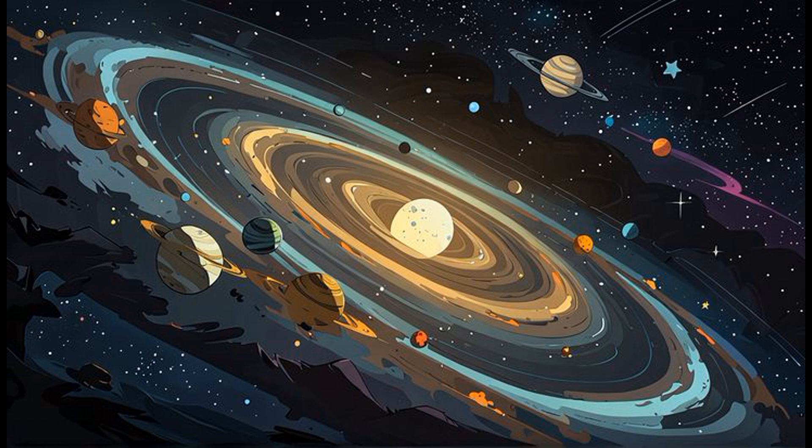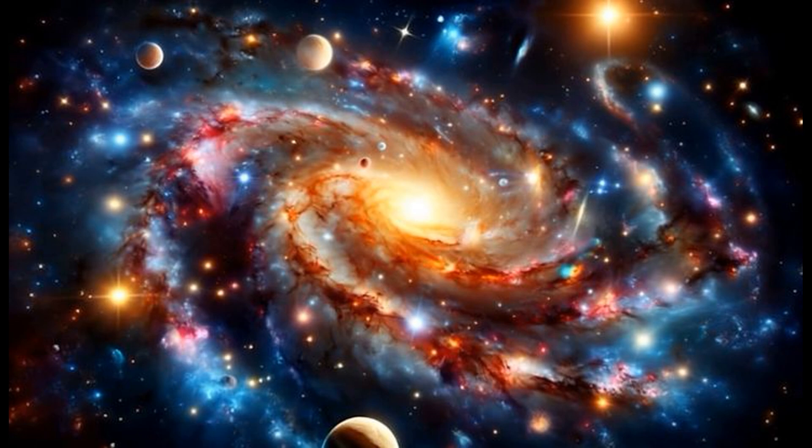Globular clusters are some of the oldest structures in the universe. They contain thousands of stars, all born from the same primordial cloud. By studying their collective properties, astronomers can age them with greater confidence than any single star. In 2004, Harvey Richer used Hubble to study white dwarfs in the cluster M4. White dwarfs are the remnants of dead stars. They cool at a predictable rate, like cosmic embers. By measuring their temperatures, Richer calculated the cluster's age as 12.7 billion years, with a margin of error of 0.7 billion.